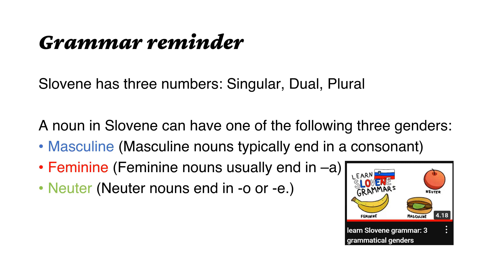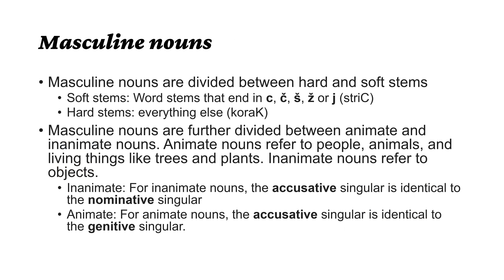How do we know a masculine? It ends in a consonant. If it's feminine, it usually ends in an A, but not always. And a neuter usually ends in O or E, but also not always. We can also have masculine words that end with A, E, or O. So we have masculine nouns where soft stems and hard stems are important.